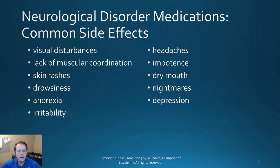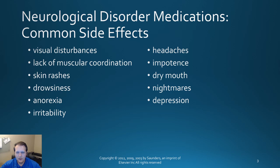Some common side effects you're going to see with medications associated with neurologic conditions include a lot of things that can slow down mentation. So you can see things where they can be very drowsy. They may develop anorexia because they just don't want to eat. May develop lack of muscle coordination which can manifest as things like ataxia where they have a difficult time walking and maybe stumbling around a little bit. Worsened depression — lots of different things that can come about from some of these neurologic medications.